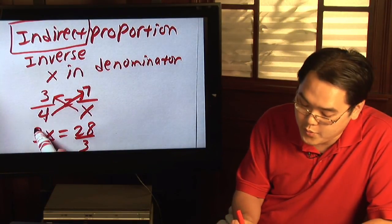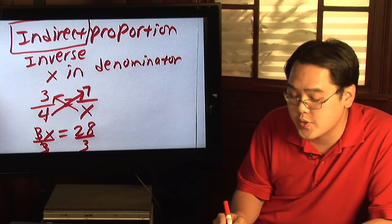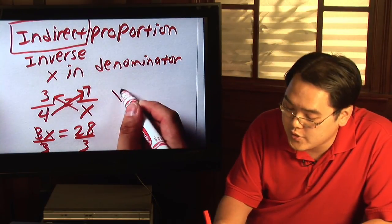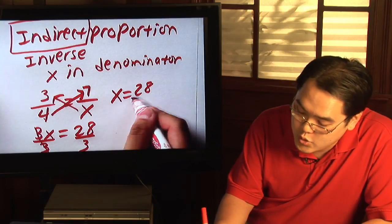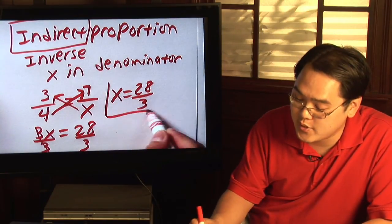So as a result the threes cancel. The three doesn't quite cancel with the 28 so it stays where it is. So as a result you have x is equal to 28 thirds. And so you have a solution.